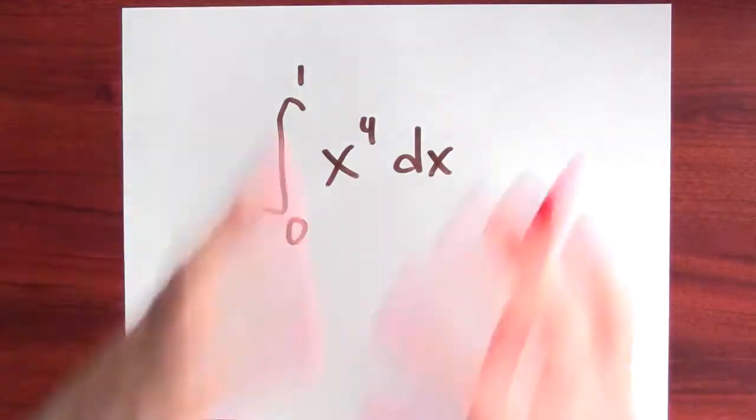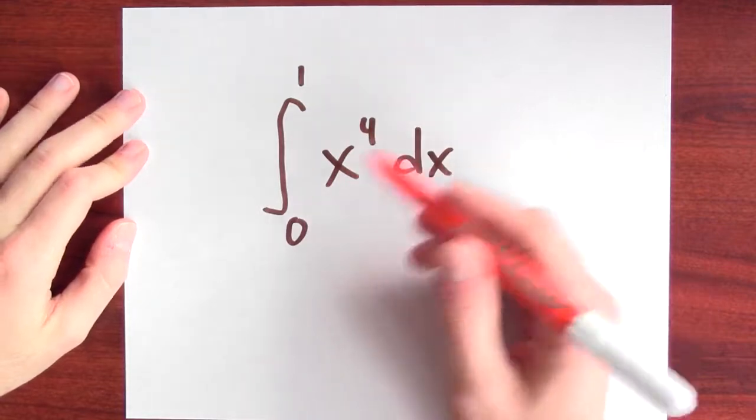To solve this problem, I can use the fundamental theorem of calculus. So, the first step is to find an antiderivative for x to the 4th.